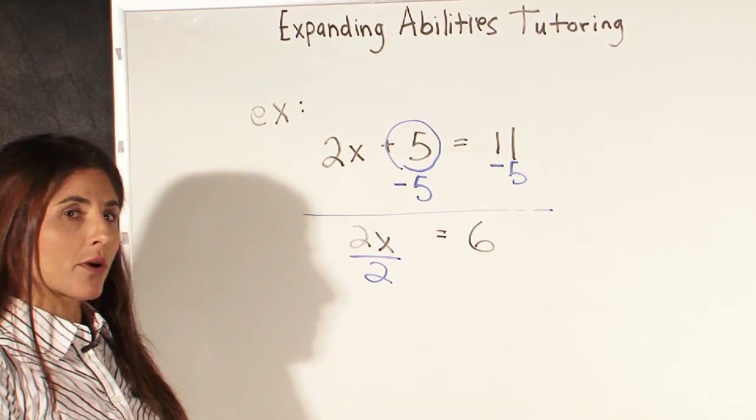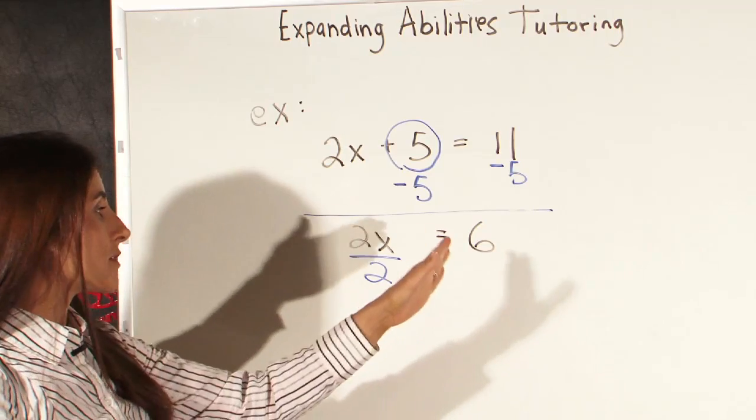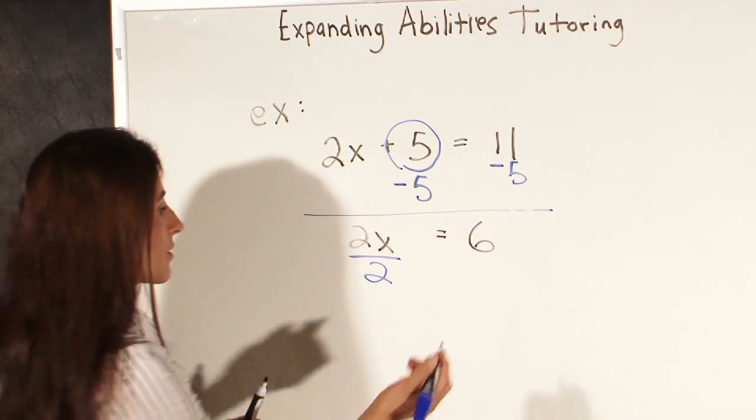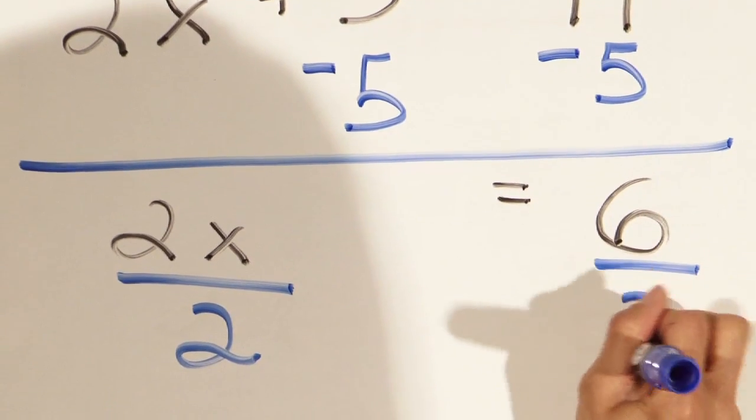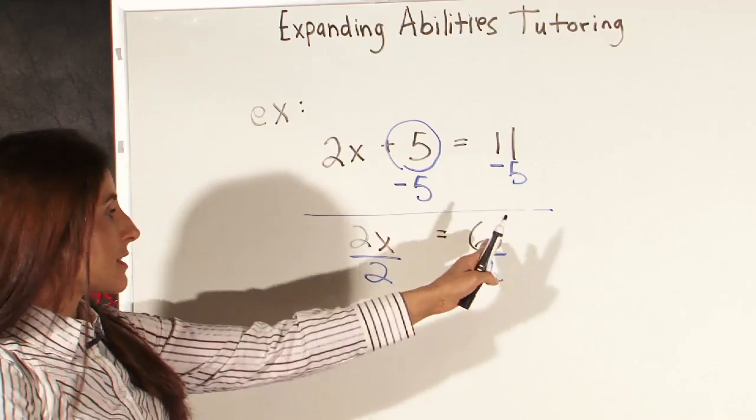And again, remember, whatever we do on one side of the equal sign, we must also do on the other side of the equal sign. So we're going to divide by 2 under the 6 as well.